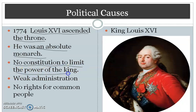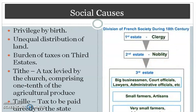The king had unlimited power, and because of that he misused his powers many times, and that later on led to the revolution. Next, the social causes. The society was also divided into three parts: first was the clergy, second the nobility, and third the common people.